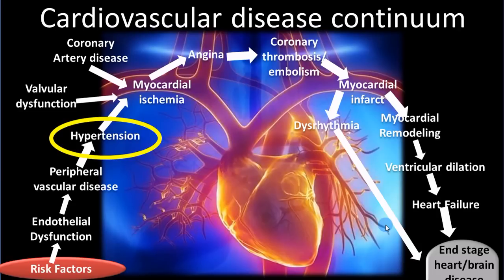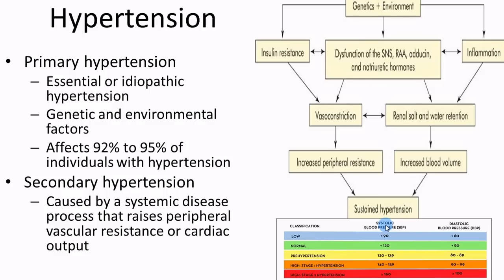Now let's go on to hypertension. The most common type — about 92-95% of all cases — is primary hypertension, also called essential hypertension, because it was thought to be part of a person's essence since the cause was unknown. Now we recognize it as genetic and environmental. If both parents had hypertension, your odds are higher, but lifestyle changes reduce risk. Causes include insulin resistance, sympathetic nervous system dysfunction, renin-angiotensin-aldosterone system problems, hormonal issues, and inflammatory responses — all causing vasoconstriction and water retention, leading to higher blood volume and higher blood pressure.